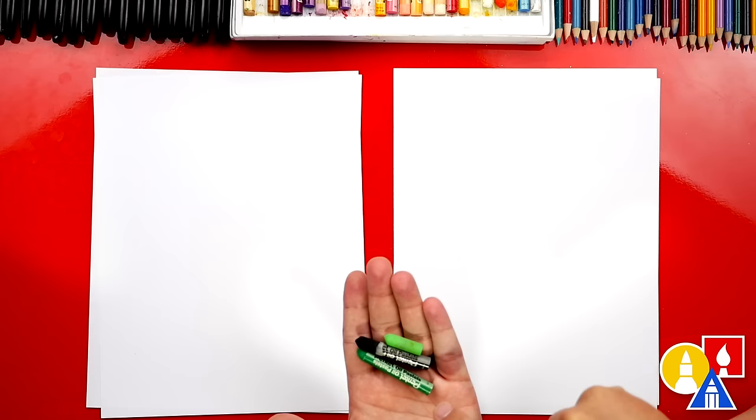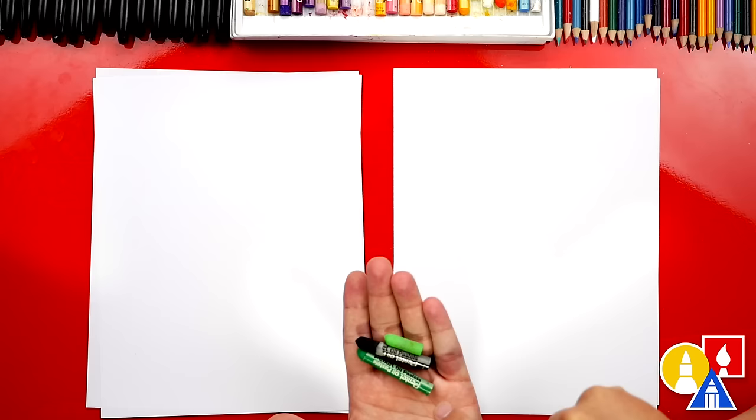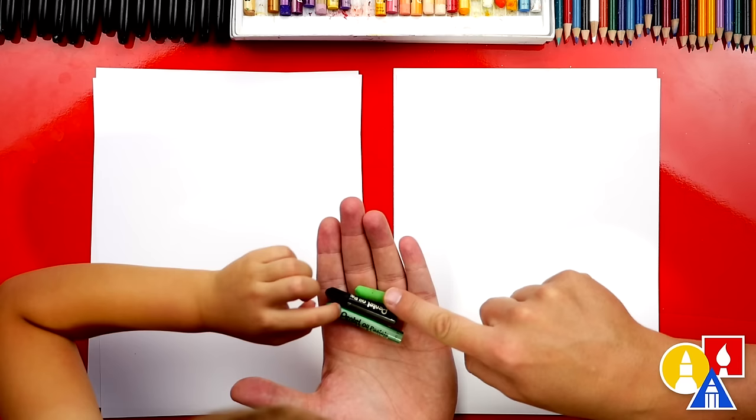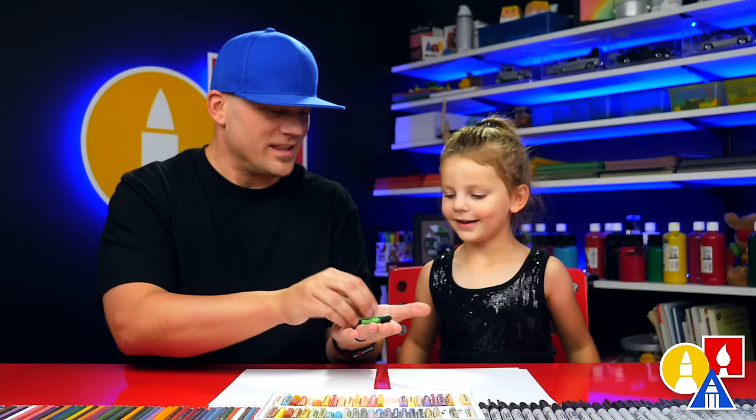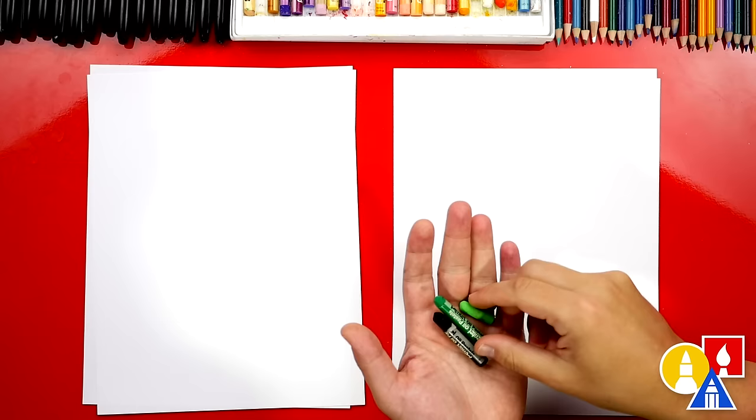You need something to draw with. What are we using? They look like crayons. What color is that? Dark green. Black. Is that green too? Yeah, a light green. We're going to use oil pastels, but you could use crayons or colored pencils.